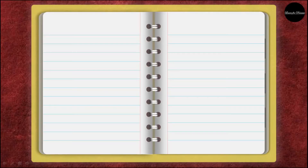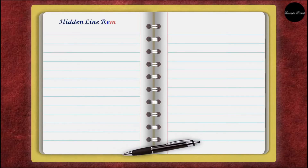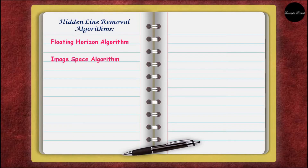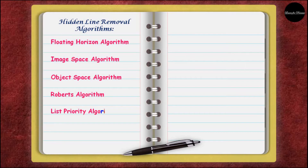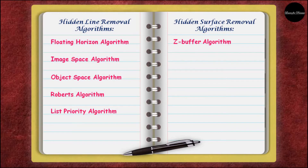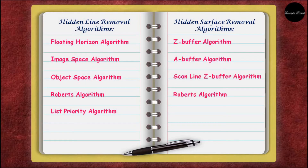Hidden line removal algorithms are: floating horizon algorithm, image space algorithm, object space algorithm, Roberts algorithm, and list priority algorithm.